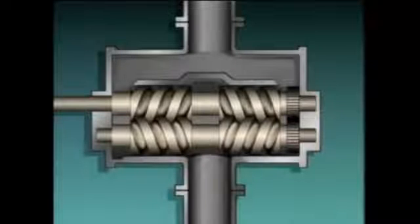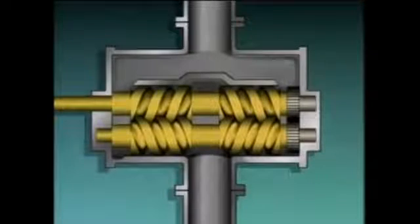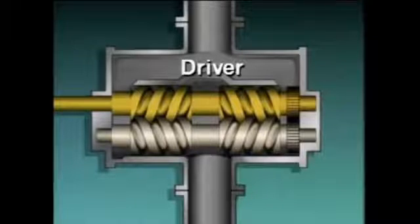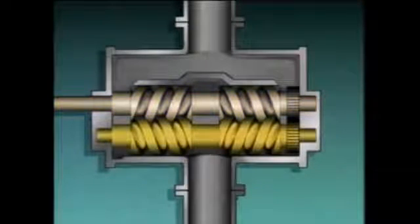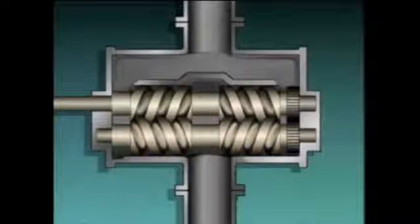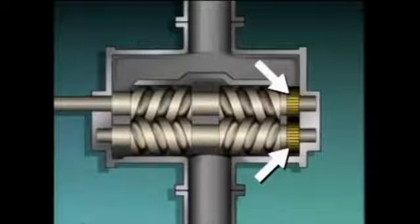Not all screw pumps use a single internal screw. This is a two-screw pump. One of the screws is attached to a shaft that's coupled to the pump's driver — this screw is known as the power or driver screw. The other screw is often referred to as the idler screw. In this pump, power is transmitted from the driver screw to the idler screw through a set of timing gears.